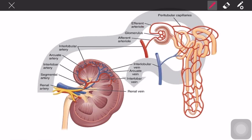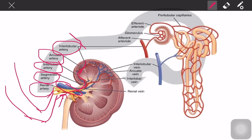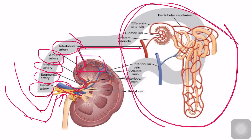The blood coming from the abdominal aorta will enter the kidneys through the renal artery — this is the first stop. The renal artery is the red one underneath the blue one; the blue one is the renal vein. Next will be the segmental artery, then the interlobal artery, then the arcuate arteries, then the interlobular artery. Next it will travel to the nephrons, which are too small to see without zooming in.